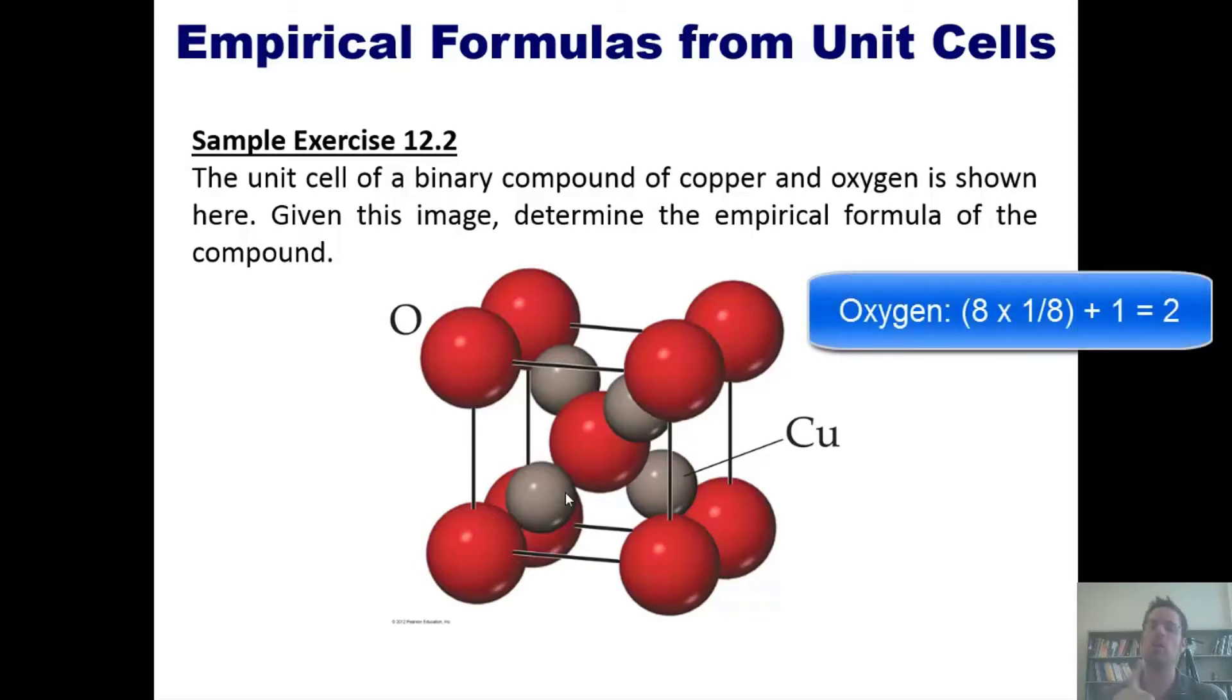I have eight oxygen atoms, but only one eighth of each one of those counts toward the total number of oxygens in the empirical formula. Separately, I also have one oxygen atom that counts completely toward the number of oxygens in the empirical formula. Eight multiplied by one eighth equals one plus the additional oxygen ends up giving me two oxygens.